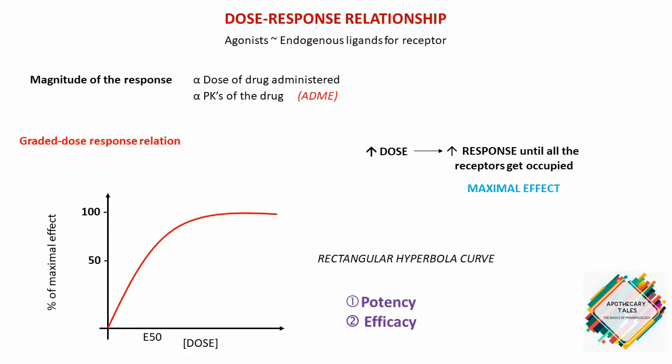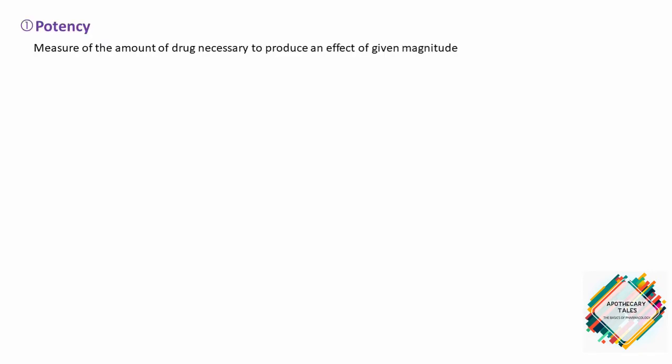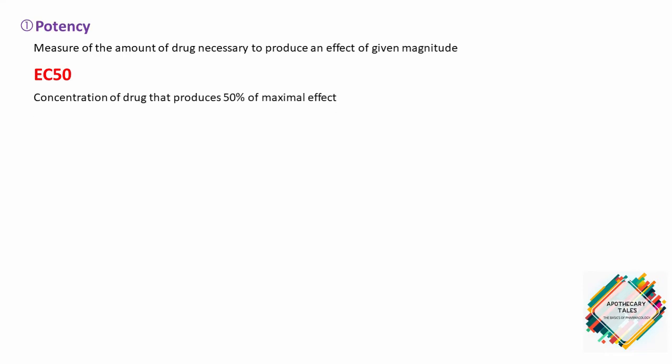Potency is a measure of the amount of drug necessary to produce an effect of a given magnitude. One important parameter used to determine potency is the EC50. The EC50 is the concentration of drug producing 50% of the maximum effect.